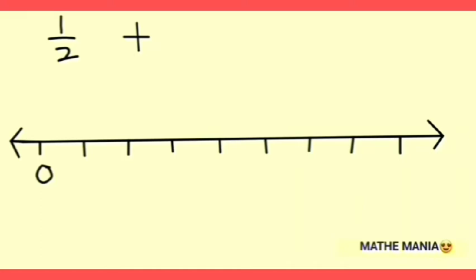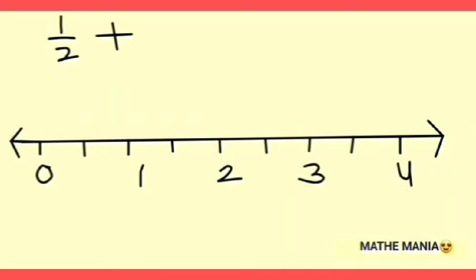Starting from the next point after 0, we count 1, 2 and reach the position for 1. Then we count 1, 2 again and write 2. In this way, I have written integers from 0 up to 4. You can write any number of integers depending on the length of your number line. Our number line is now ready for representing any number with denominator 2.